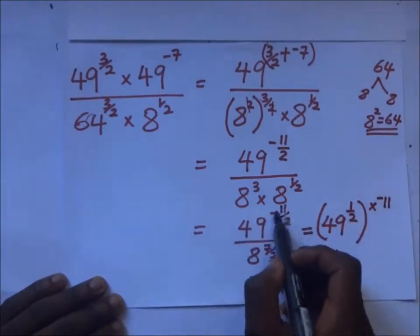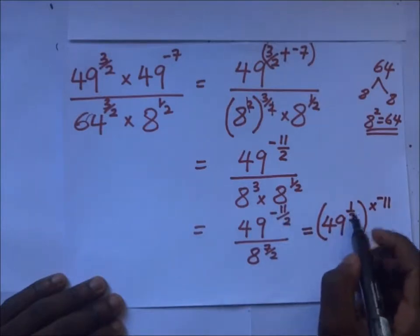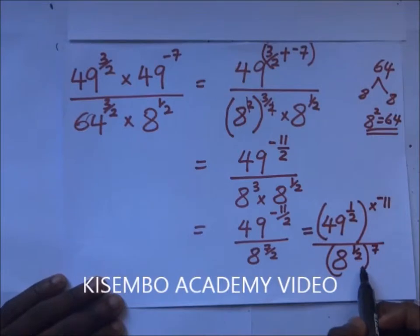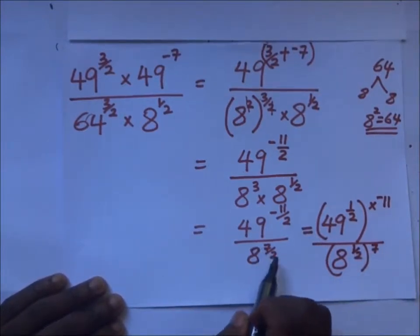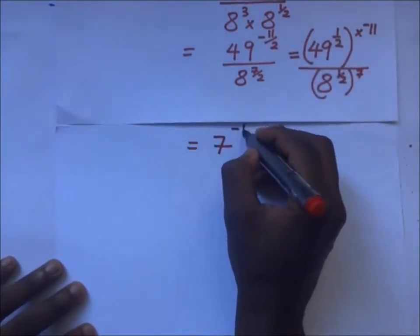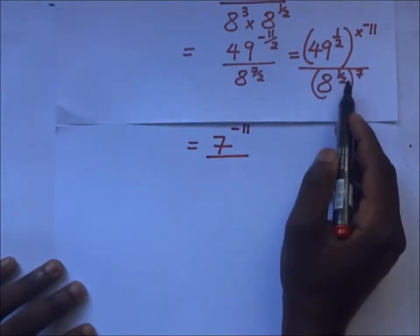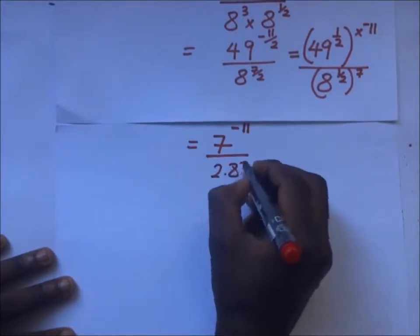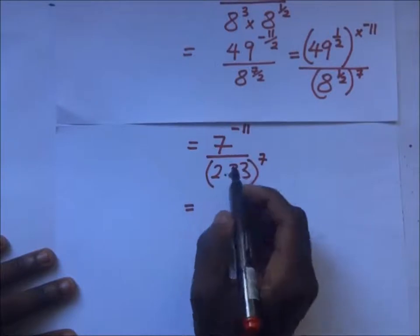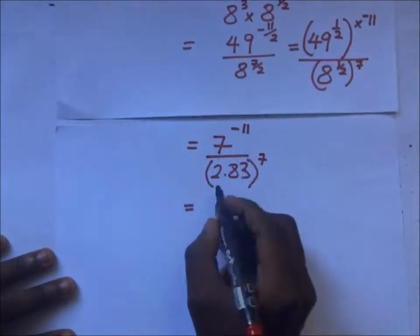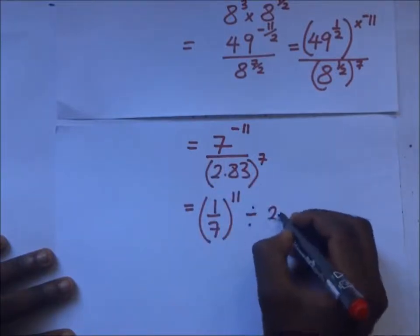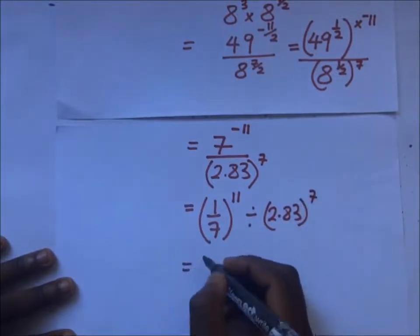So it's 49 to the power half, divided by 8 to the power half, all to the power 7 — because 7 times a half gives 7 over 2. The square root of 49 is 7, so it's 7 to the power negative 11. Divided by the square root of 8, which is approximately 2.83, all to the power 7. To remove the negative, we find the reciprocal: 1 over 7 to the power 11, divided by 2.83 to the power 7.